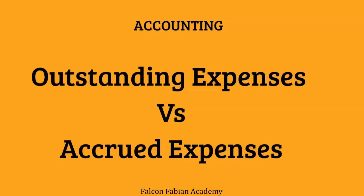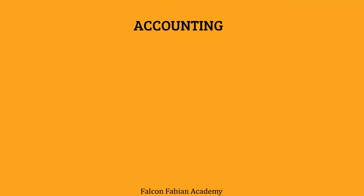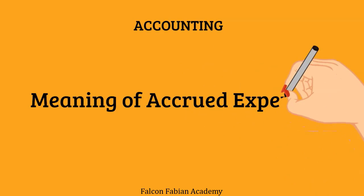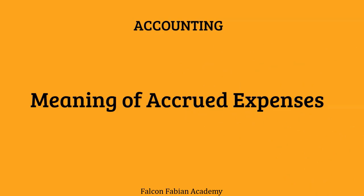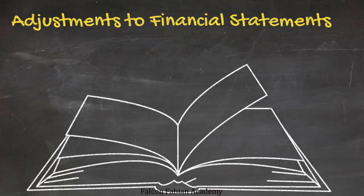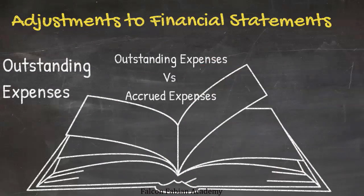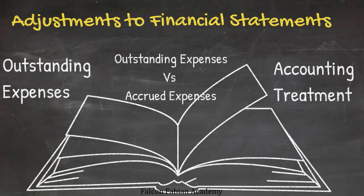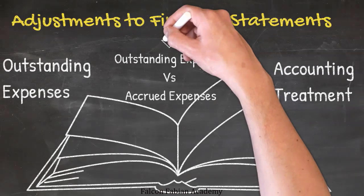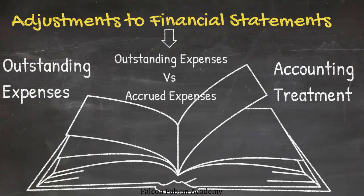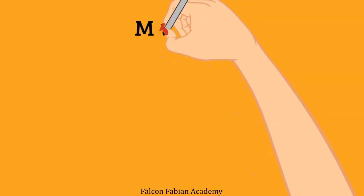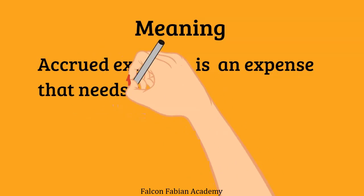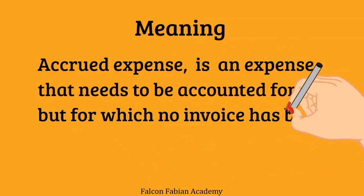Before we understand the difference, let's understand what we mean by the term accrued expenses. If you are new here, we've already explained the meaning of outstanding expenses in the previous video. An accrued expense is an expense that needs to be accounted for, but for which no invoice has been raised and no payment has been made.